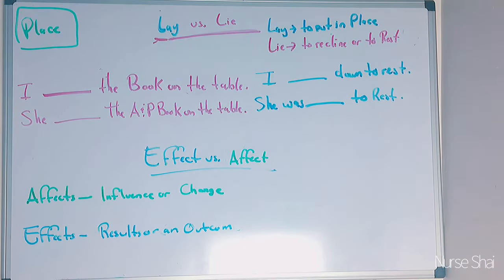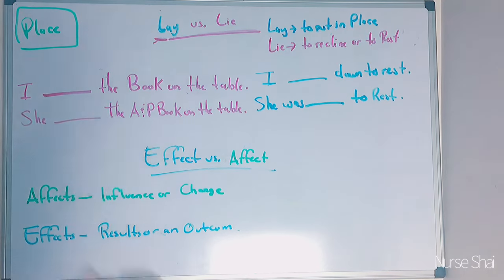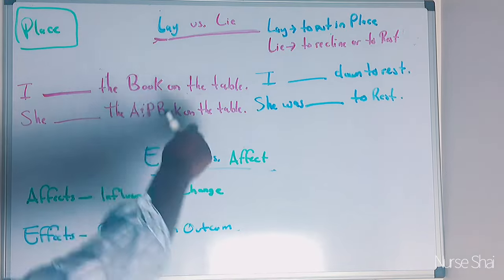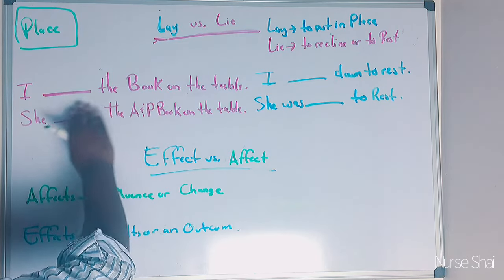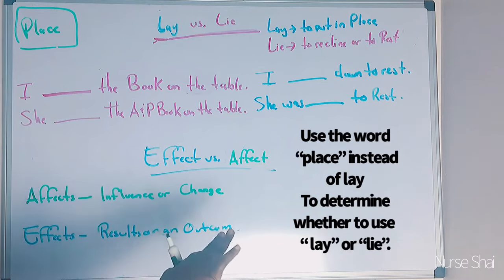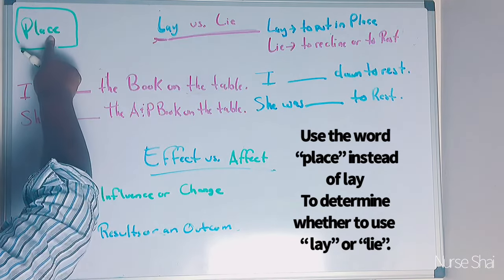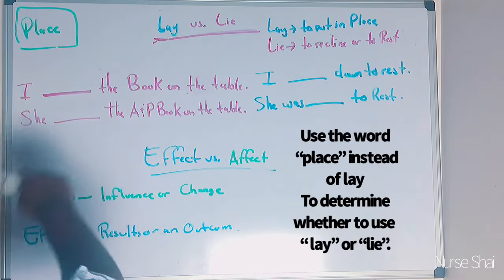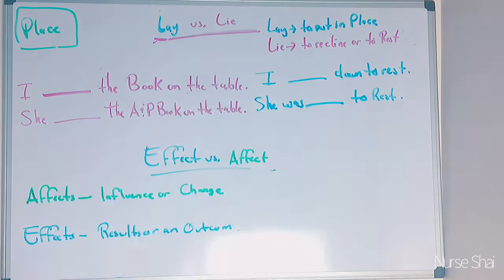Lay versus lie — this is definitely on the HESI. Lay is to put something in place. Lie is to recline or rest. One thing that helped me: you can substitute the word 'place' for 'lay' in a sentence to figure out if it makes sense. If it makes sense, then you can use the word 'lay.' For example: 'I blank the book on the table' — 'I placed the book on the table' makes sense, so you use 'lay': 'I lay the book on the table.'